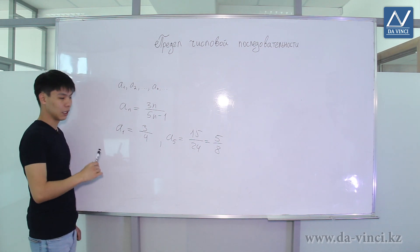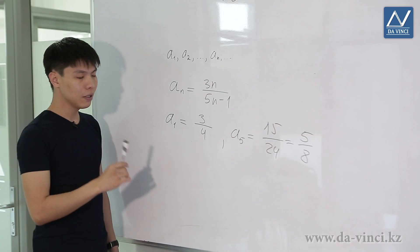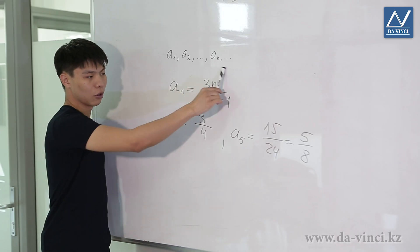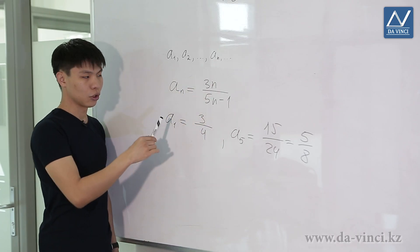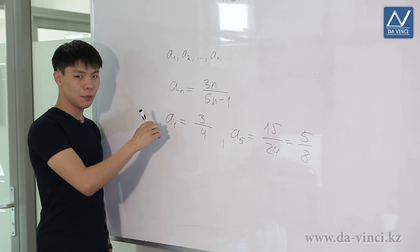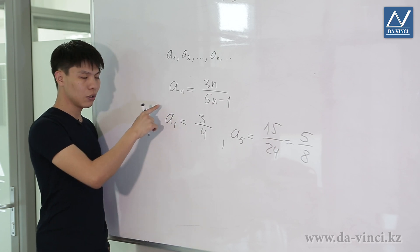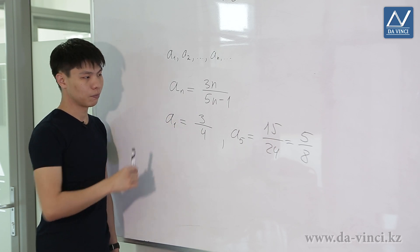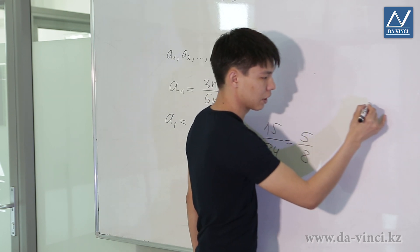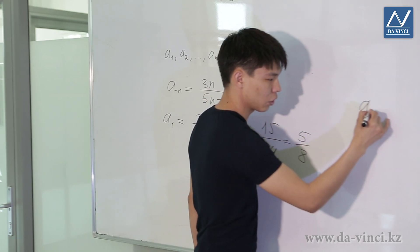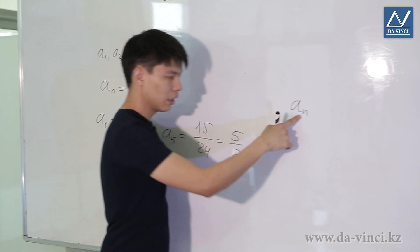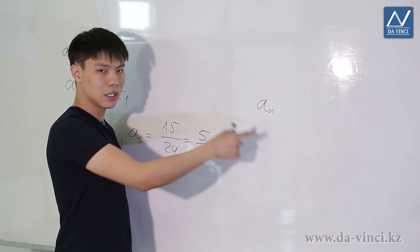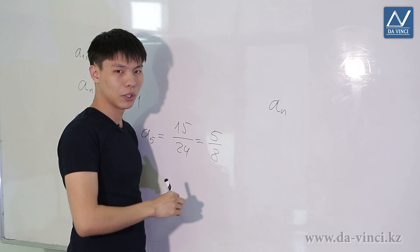Then we reduce the fraction, and so on. The sequence is usually given as a formula, as in this case, but sometimes it is given by the so-called recurrence relation. The recurrence relation means that the Nth element of the sequence is expressed in terms of any of its previous elements.